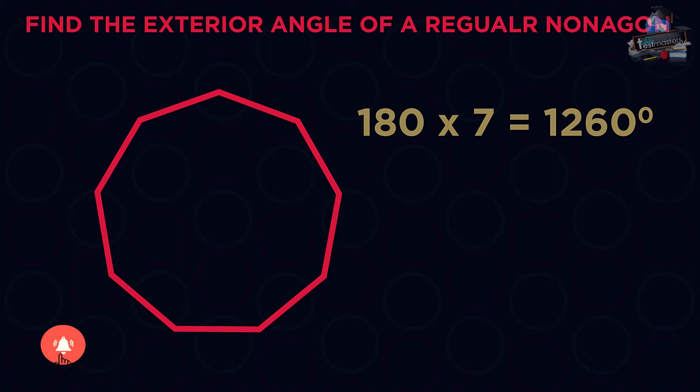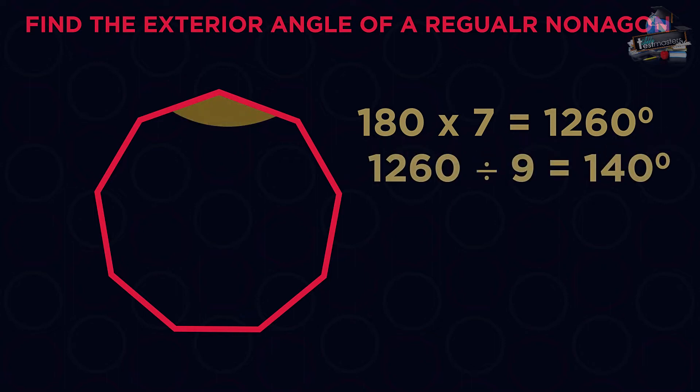So seven times 180 means there are 1260 degrees in a nonagon. So one interior angle is 1260 divided by nine sides, which is 140 degrees.